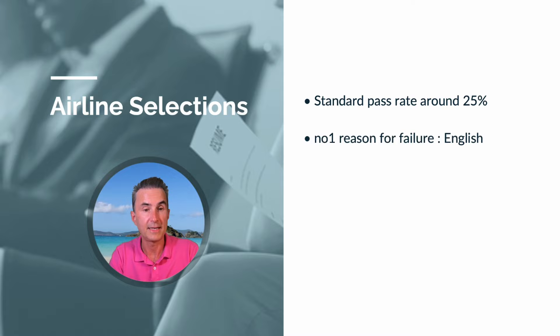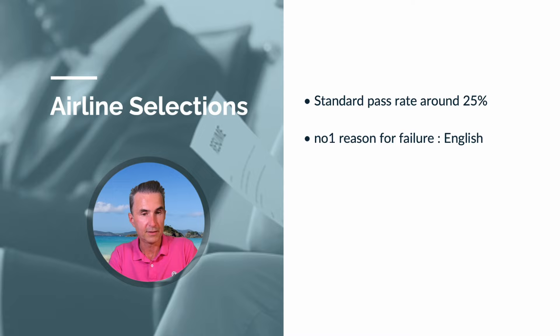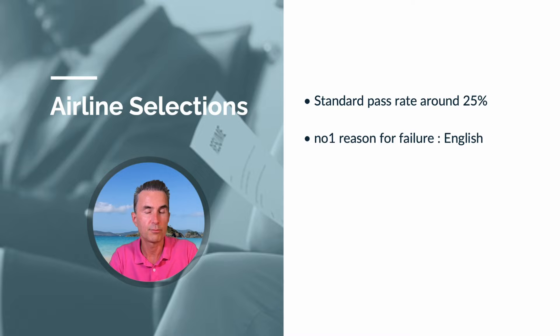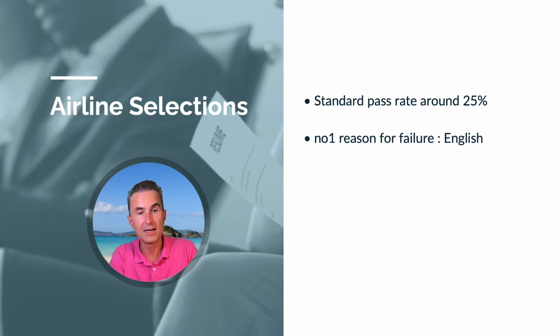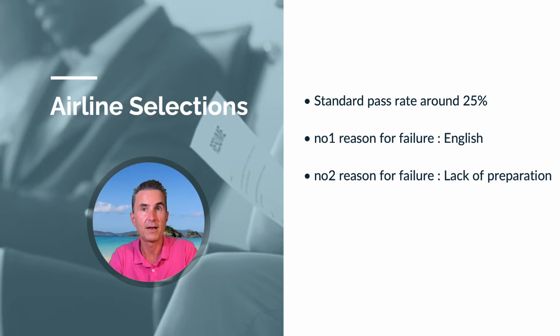The number one reason for failure is English. It might not be the case for a German pilot applying for a German airline, but in the context of Wizz Air, the number one reason for failure is English. If you've got a level six, you're probably good enough. If you've got a level five, not necessarily. If you're translating in your base language when you speak, you are probably not good enough. Those who speak good English are a lot quicker — they don't have 30 or 40% of their capacity impaired by translating. Your career depends on it.